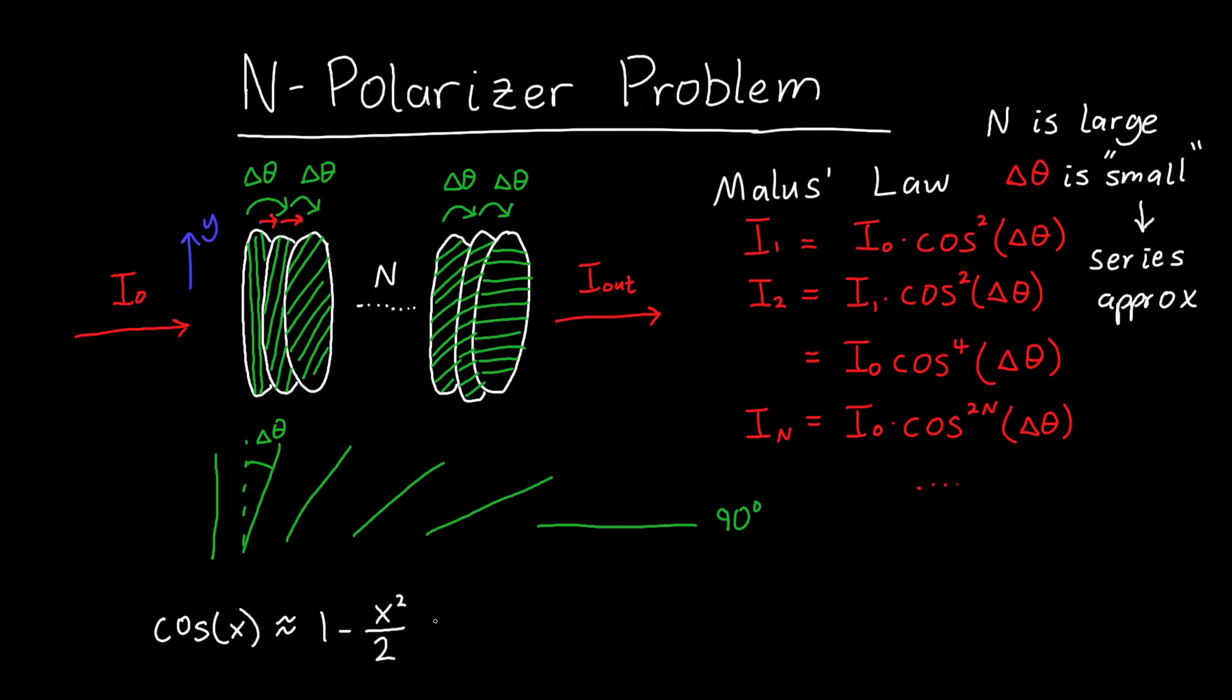That's nice and simple. There's a bunch of other terms off to the right, but as long as x is small, we can ignore them. So I can say that this is approximately I₀ times (1 minus Δθ² over 2), and then all that is to the 2n.